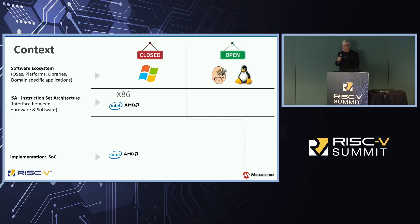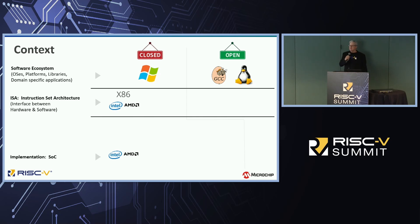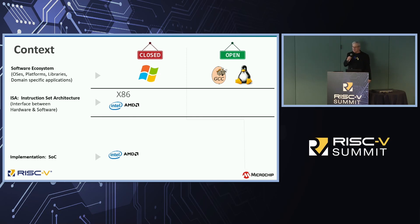Eventually people started focusing on open source. The open source revolution — you could probably pin down the date. GCC, Richard Stallman invented a compiler that anyone could use, compiling C and Fortran and other things to the Intel x86 architecture. Then in 1993 there was an email sent out saying 'here I have this operating system, check it out' — that was Linux. So now the world started to cleave into kind of an open and closed world.